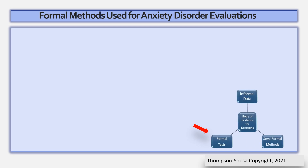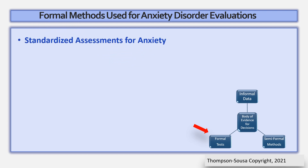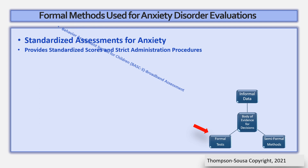Let's examine the first leg of the assessment triad, known as the formal methods area. Formal methods are typically standardized assessments and tests. Formal methods generally have psychometric scores associated with them, such as standard scores, percentile ranks, and T scores. They also have strict administration procedures.